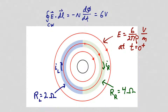At the boundary between the left and right rings at the top, there is more current flowing into the boundary than away from it, so it will start to charge up positively. At the boundary on the bottom, there is more current flowing away from that boundary than into it, so there will be a net buildup of negative charge.